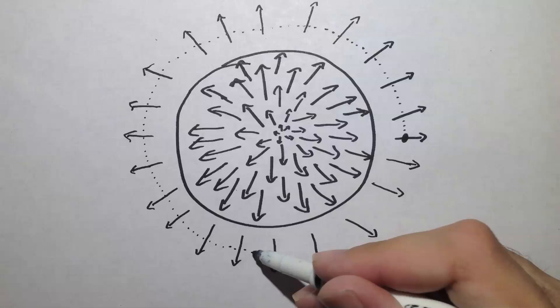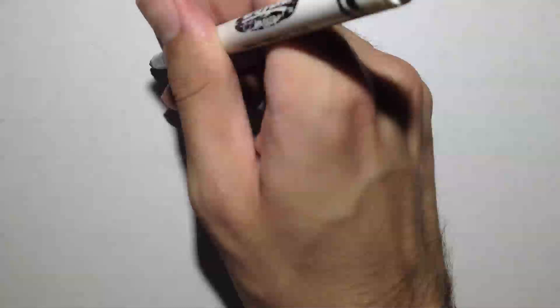For example, in this vector field, we walk around and we find that we go through one full turn. In this other field, we go through two turns. Let's call this measurement the winding number.